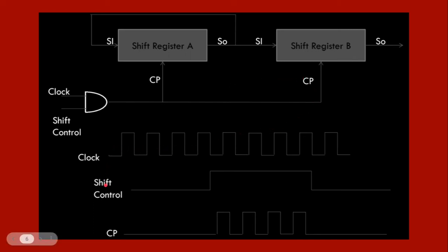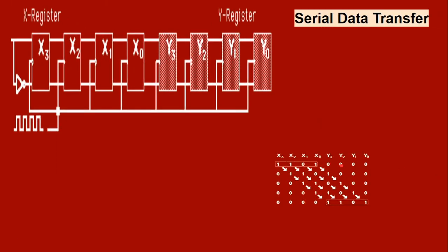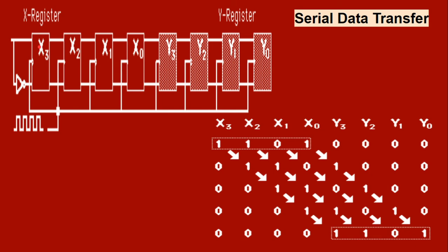Now let us see how the data is actually shifted. The input bits are X0, X1, X2, X3, with the clock pulse connected to all inputs. This is the X register (input device) and the Y register is the output register, with outputs Y0, Y1, Y2, Y3. For serial data transfer: when the first clock ticks, X0 moves to Y3; when the second clock ticks, Y3 shifts to Y2 and X1 moves to X0's position. Each shift moves all data one position — for example, 1101 shifts right to 1101 across the registers.